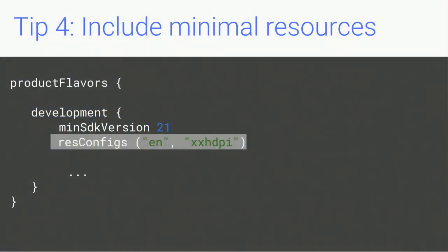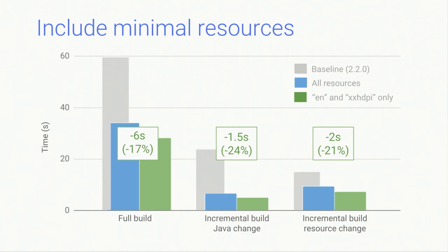Tip four is to minimize the set of resources packaged in your development build. By default, the build system includes resources for all languages and screen densities that your app and its libraries define. If your app supports many languages or densities, you're wasting time building resources you won't use during development — you're only ever probably using one set. Use the resConfigs keyword and specify the language and screen density you need for development builds. This gave us another six seconds off the full build, 24% off the incremental Java change, and 21% off the incremental resource change.